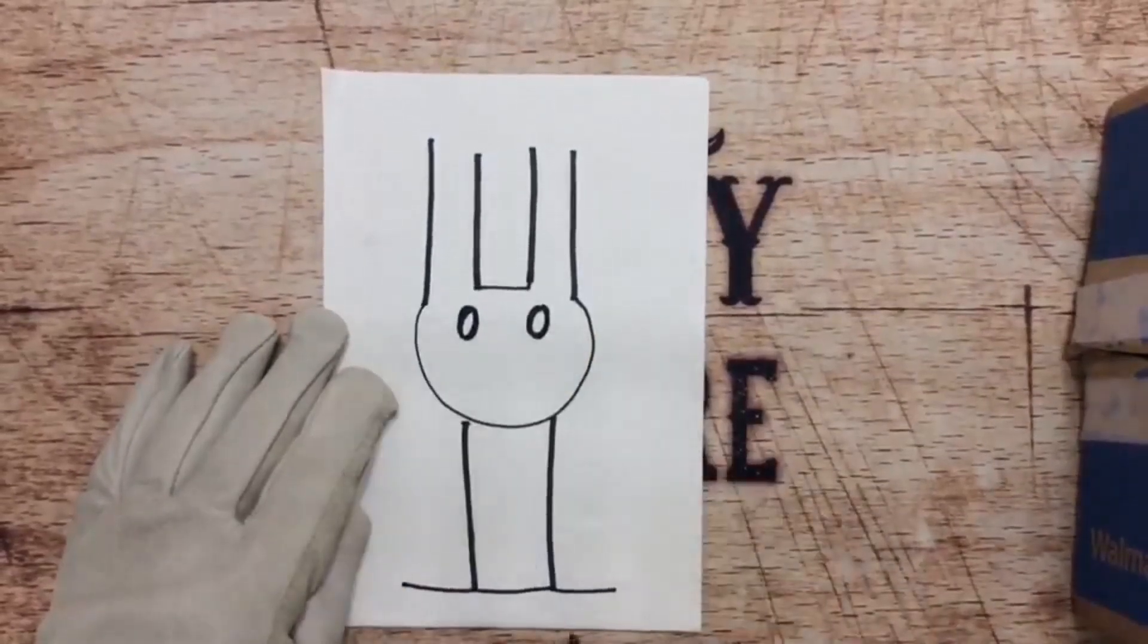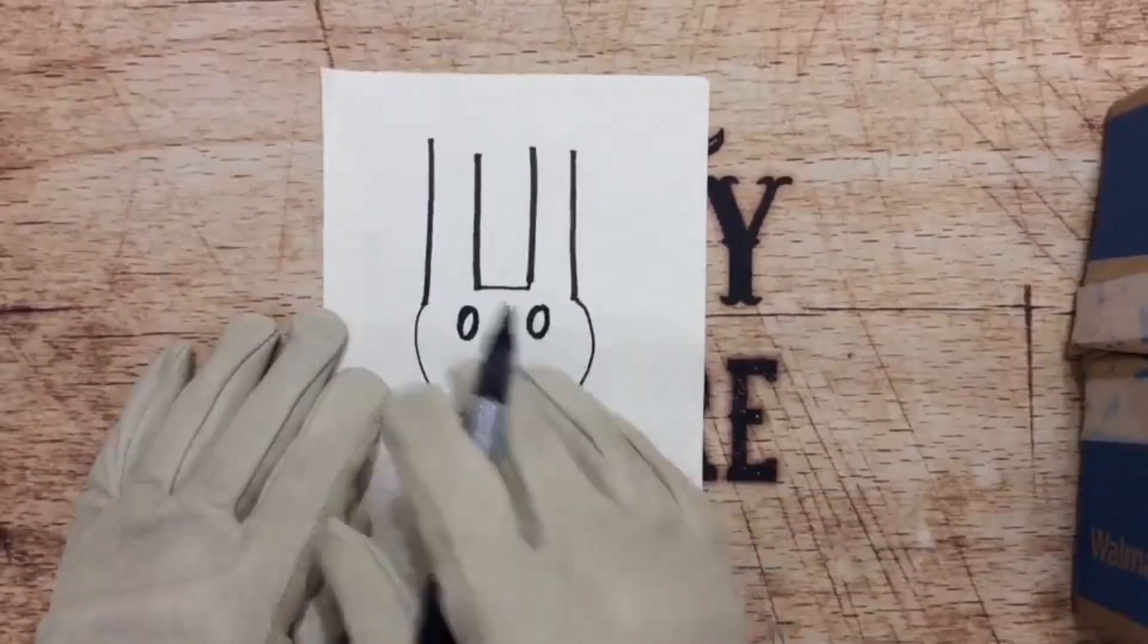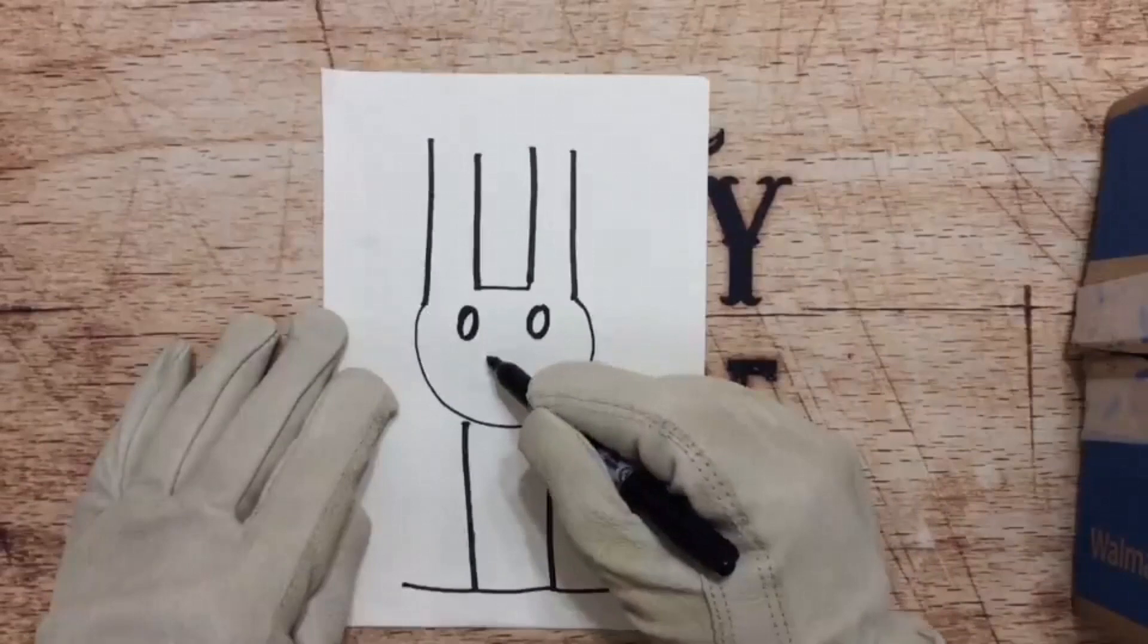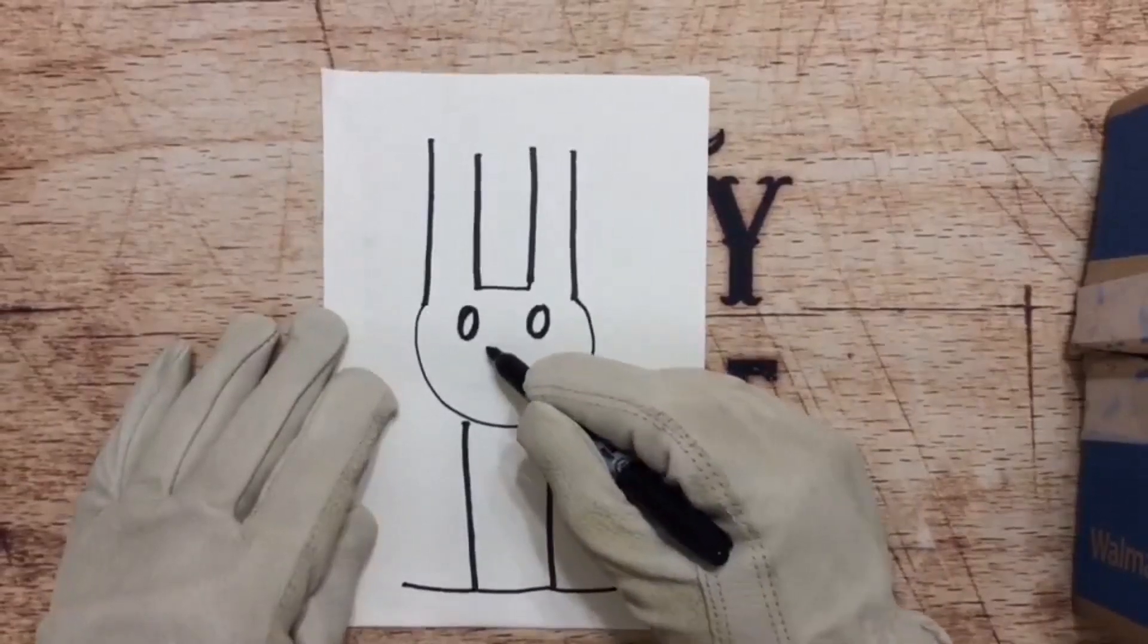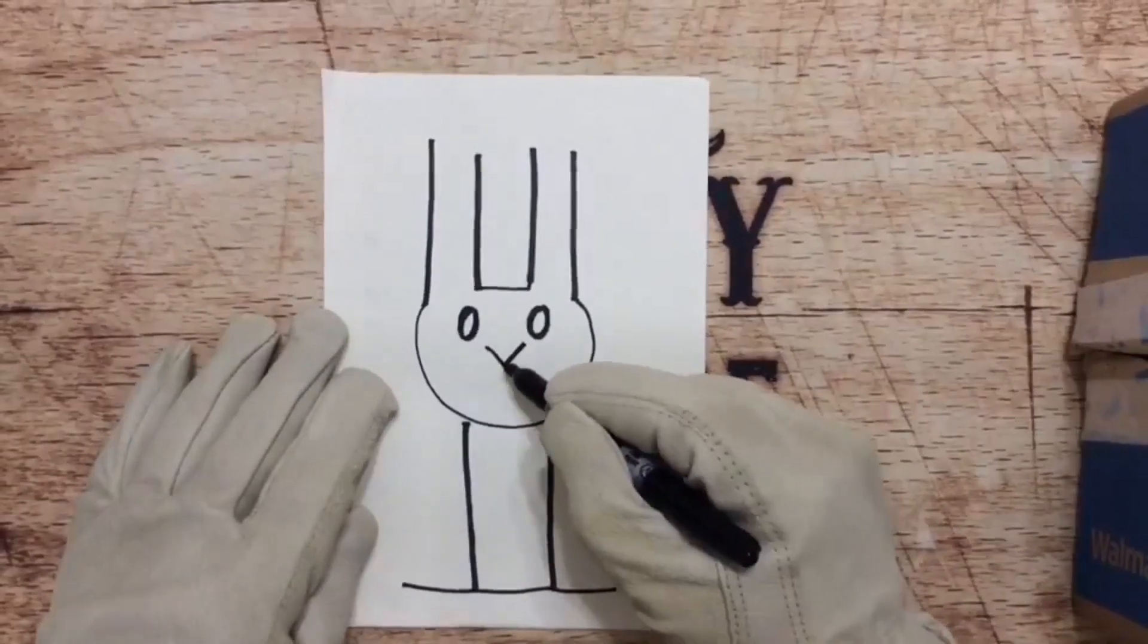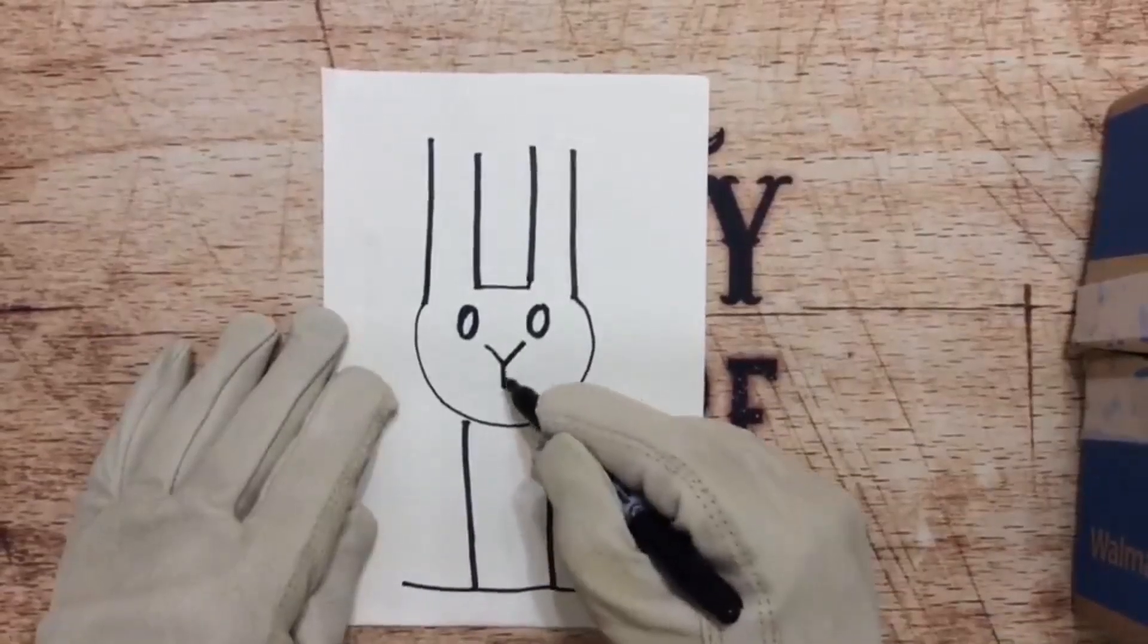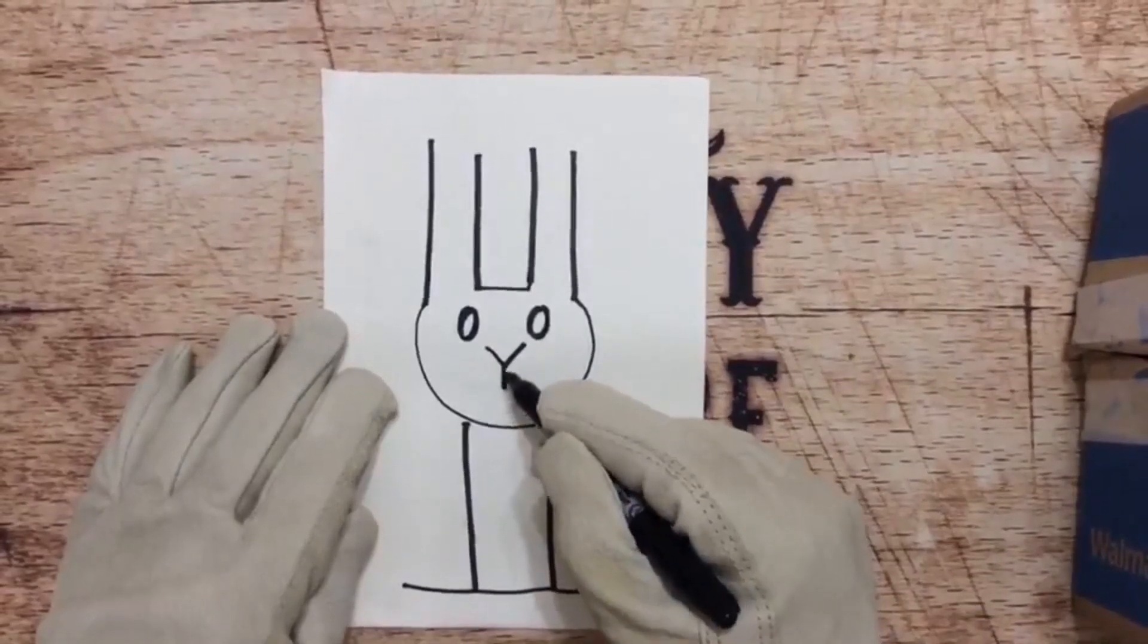Now for his muzzle, now the muzzle is your nose and mouth area on an animal. So for this critter, what we're going to do is we're going to do a capital Y, just like this. So now we've got his bunny rabbit nose, and we've got this muzzle area where the pallet's been split.